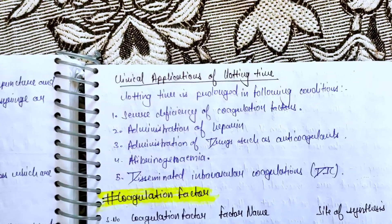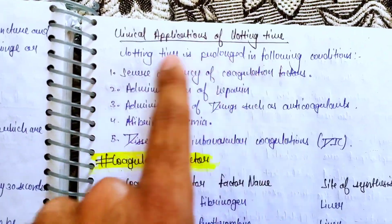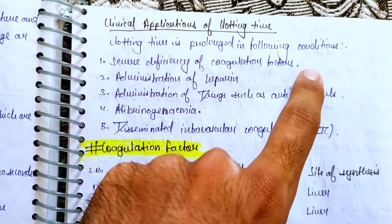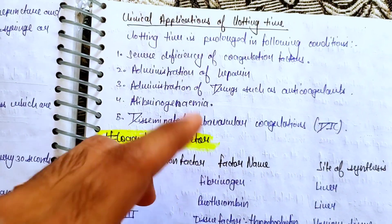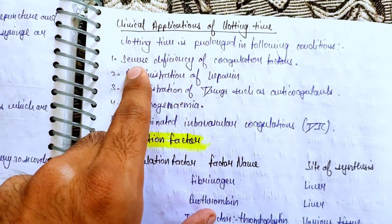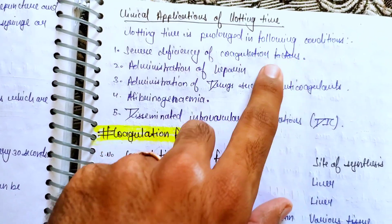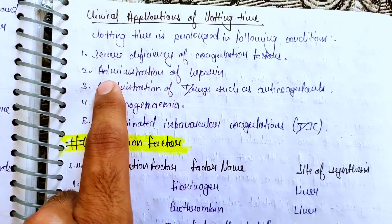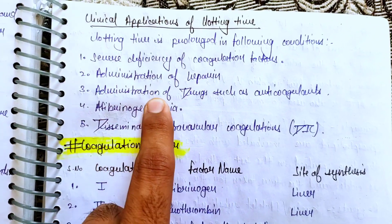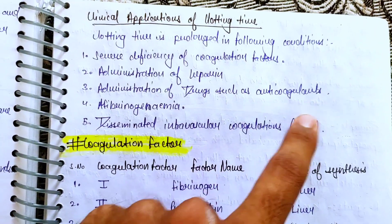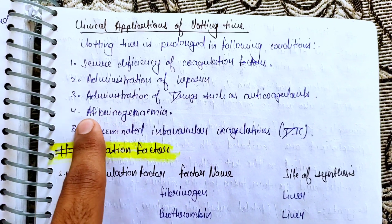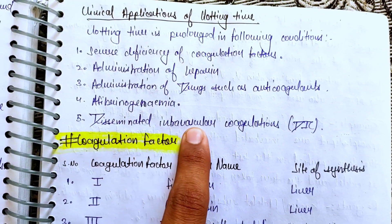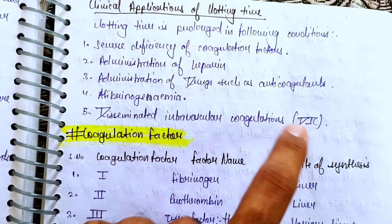The clinical applications of clotting time: clotting time is increased in the following conditions — severe deficiency of coagulation factors, administration of heparin, administration of anticoagulant drugs, fibrinolysis, and Disseminated Intravascular Coagulation (DIC).